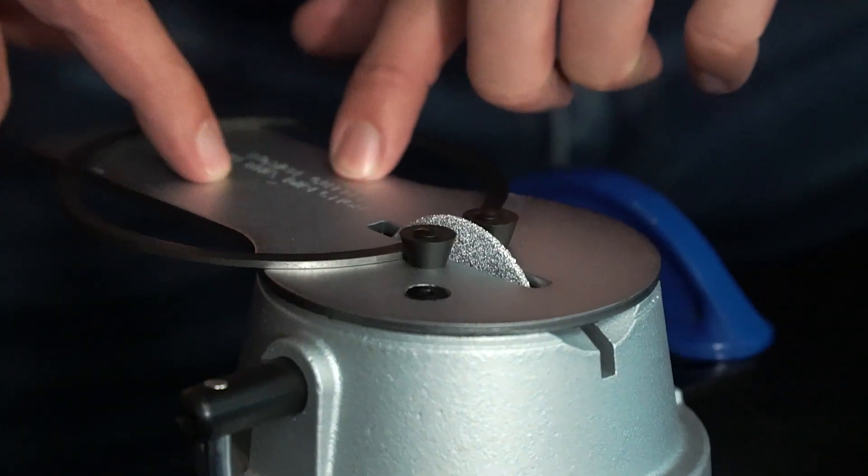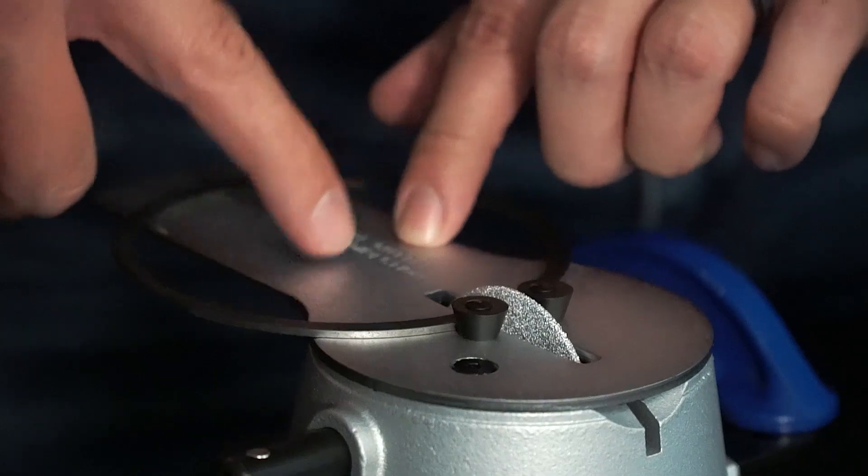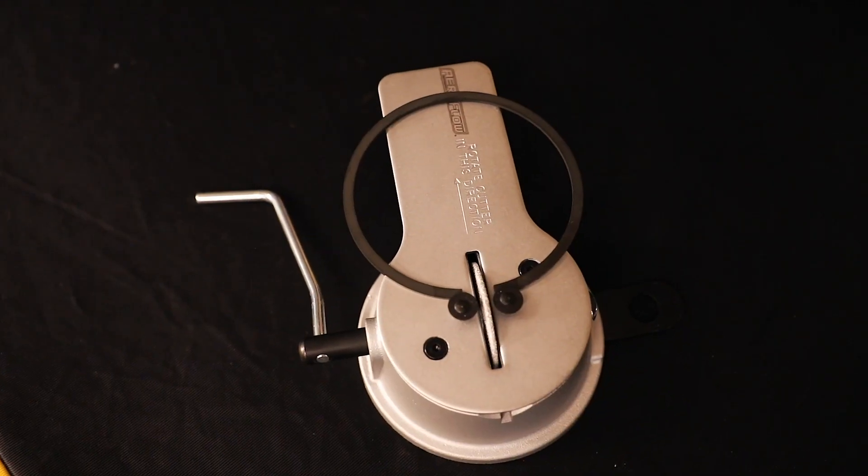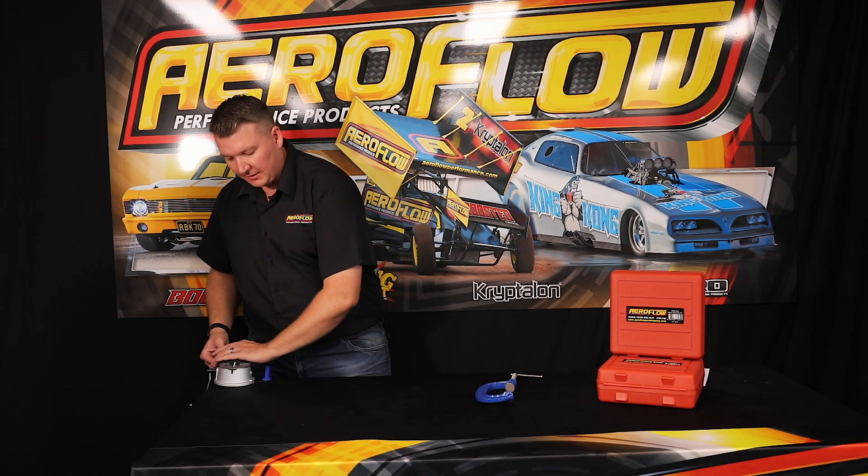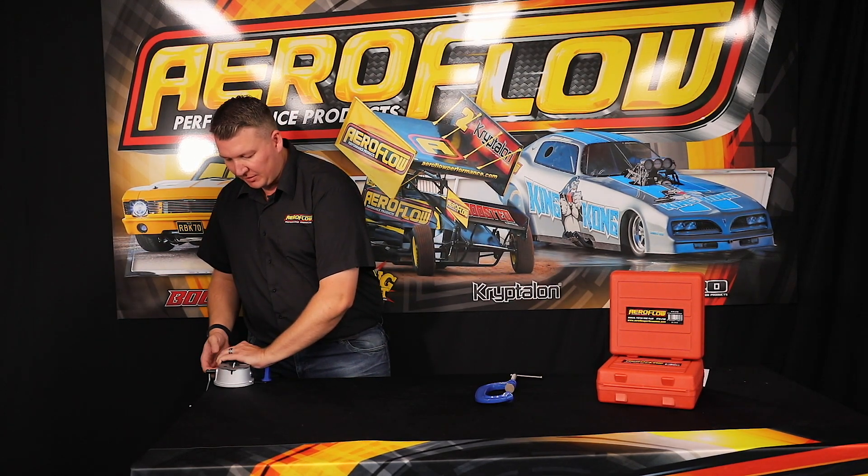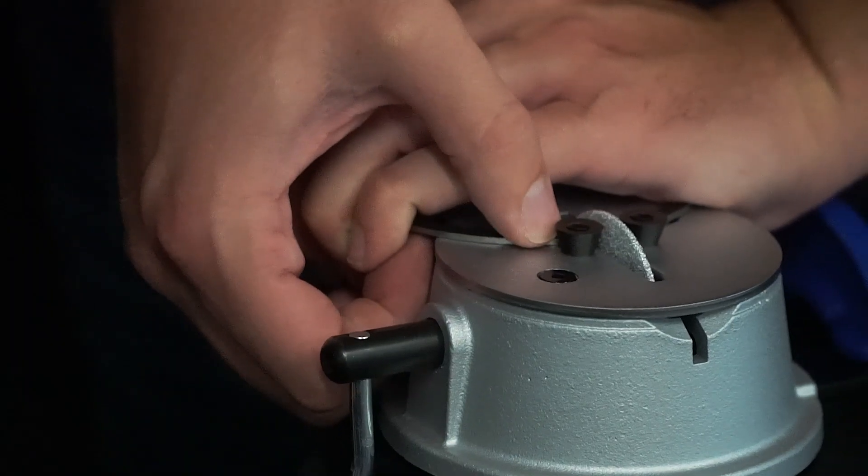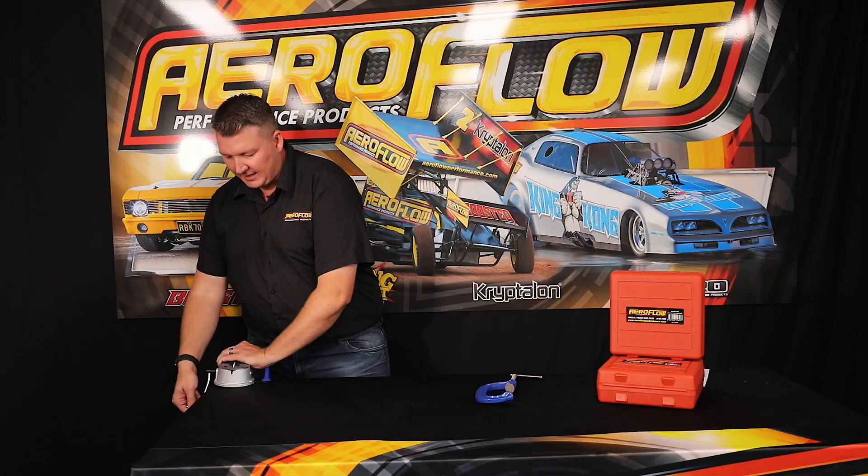Once you've got the piston ring in place, you can see the instruction on the filer itself, suggesting that the wheel should turn towards you or towards the inside of the piston ring when you're looking down on it. Apply your pressure, make sure that the ring's square, and then rotate the handle, in this case, back towards yourself.